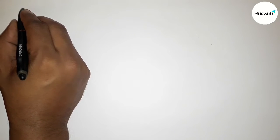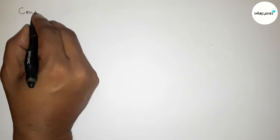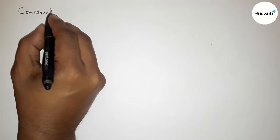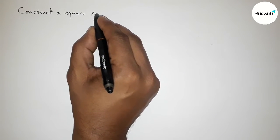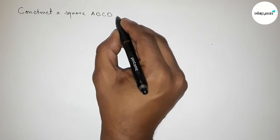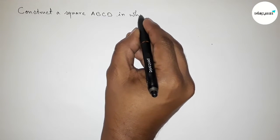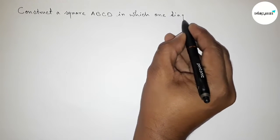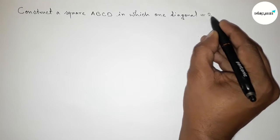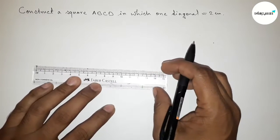Hi everyone, welcome to essay share classes. Today in this video we have to construct a square ABCD in which one diagonal equals to 2 centimeter. So please watch the video till the end. Let's start the video.